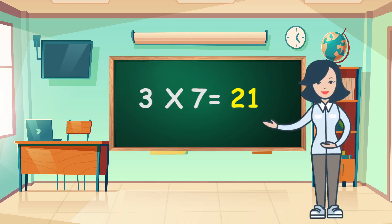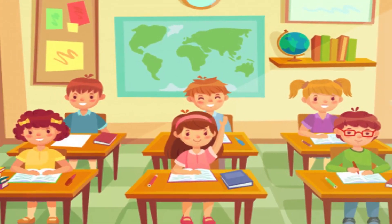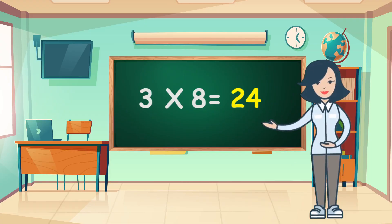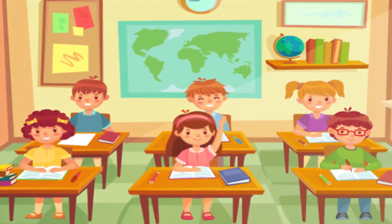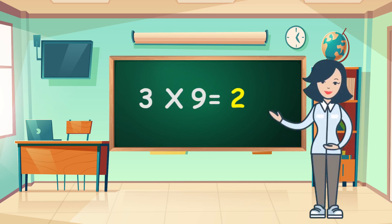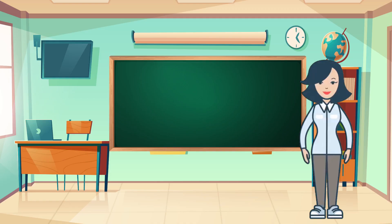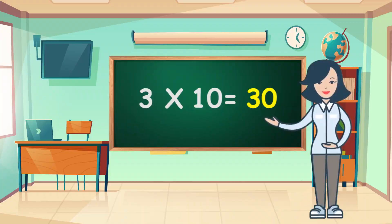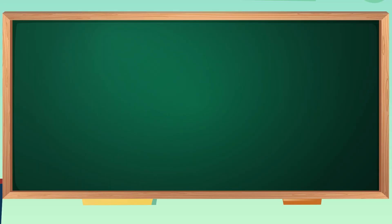Three sevens are twenty-one. Three eights are twenty-four. Three nines are twenty-seven. Three nines are twenty-seven. Three tens are thirty. Three tens are thirty.